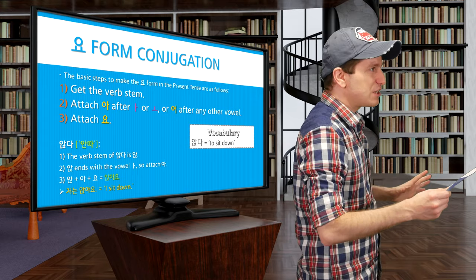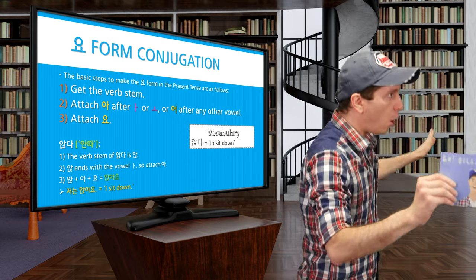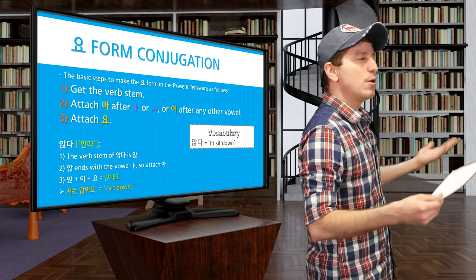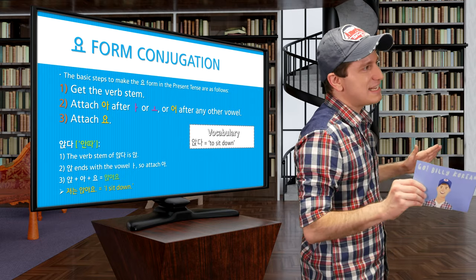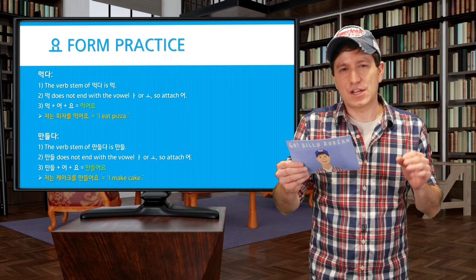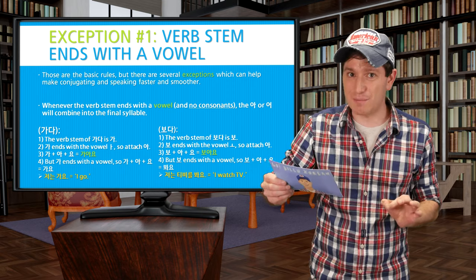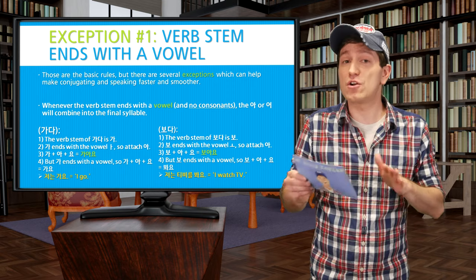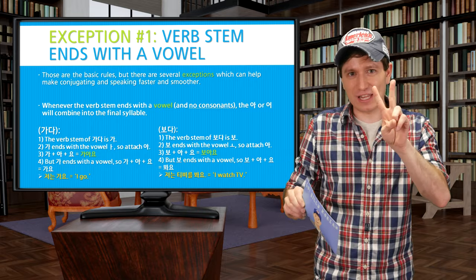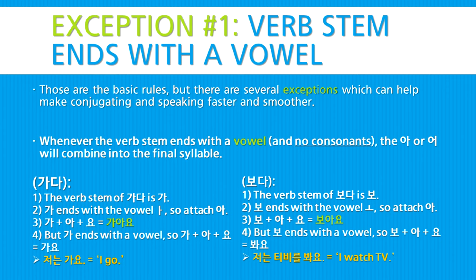There are some exceptions, but they are all to make things easier for you — many will happen naturally. Once you've got these exceptions down, you'll be a master at conjugating any verb to the 요 form. Our first exception is whenever the verb stem ends with a vowel — meaning there are no consonants at the bottom; it simply ends with a vowel and that's it: just two letters, one consonant and one vowel. Whenever that happens, the syllable 아 or 어 that you would normally attach will actually combine into the final syllable of that verb.